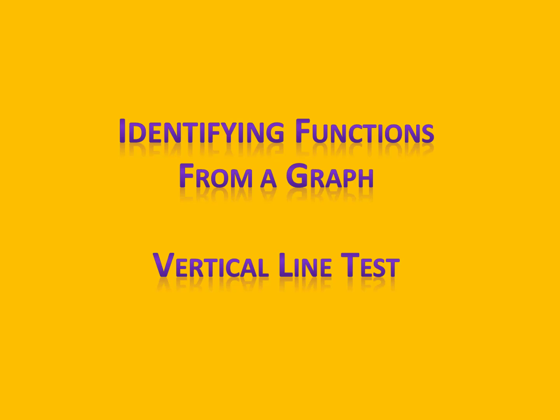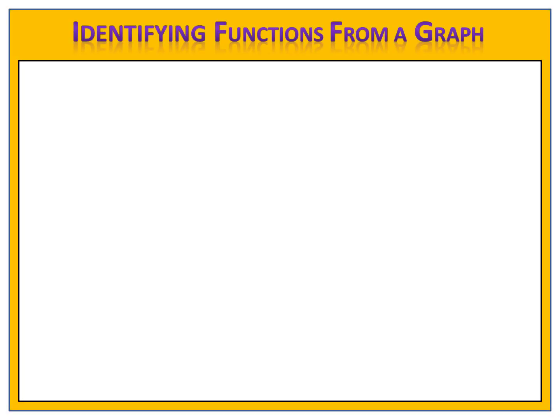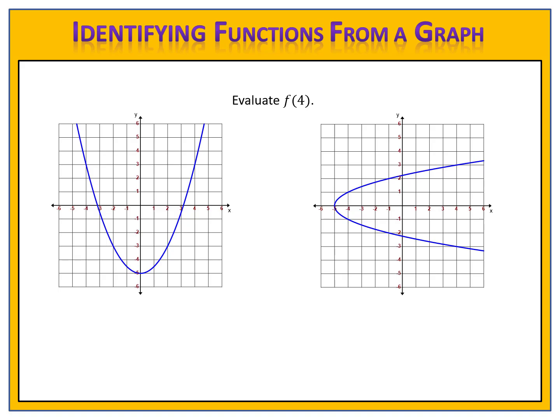In this lesson, we're going to learn how to identify functions from a graph using something called the vertical line test. Let's take a look at an example. Suppose we have two graphs that show inputs and outputs. We want to evaluate f — in other words, the input is 4, and we want to find the output.